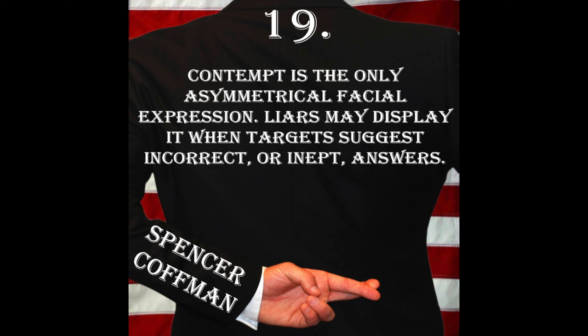In episode 12 we discussed simultaneous gestures — gestures happening simultaneously with speech — that's another form of symmetricality. Usually, truthful behavior happens with symmetricality. However, with this deception tip, there is an asymmetrical facial expression. This is the expression of contempt, and it is the only asymmetrical expression that happens on the face — the only one you will see happen on one side of the face.